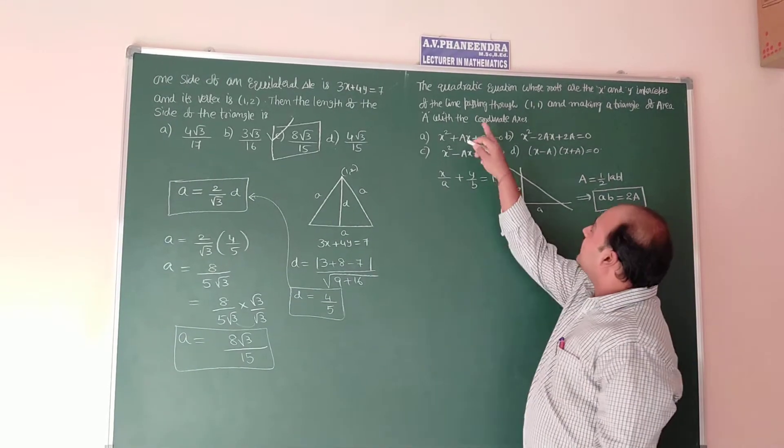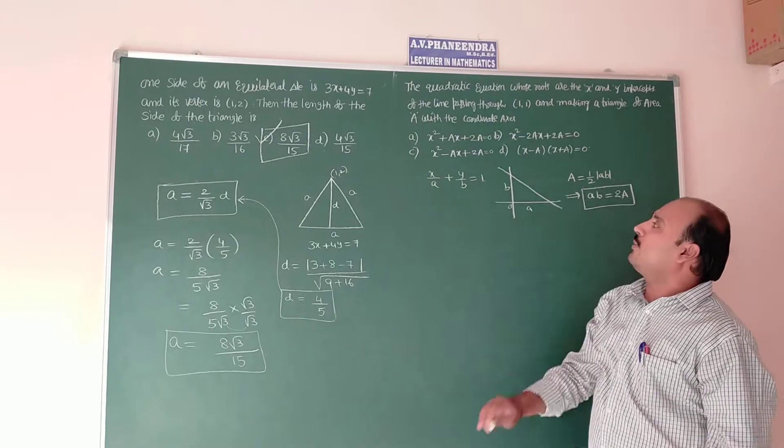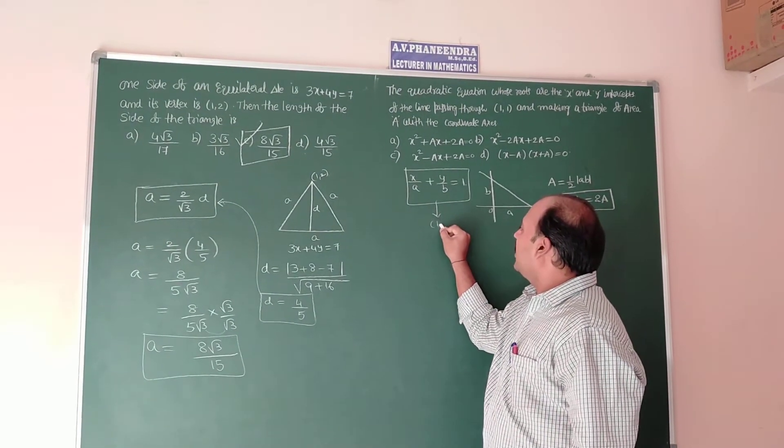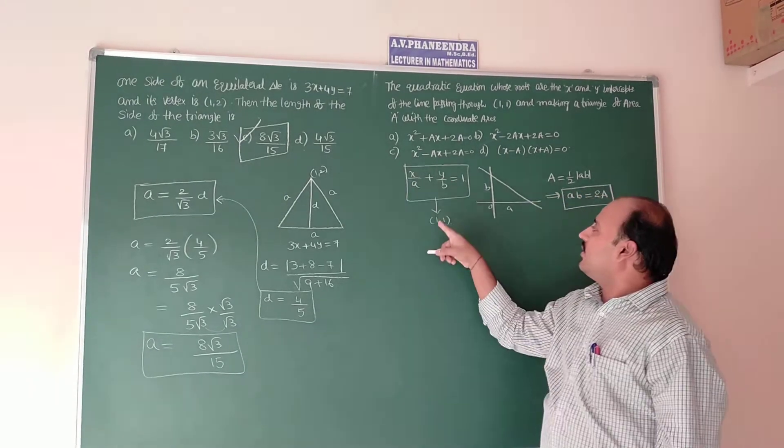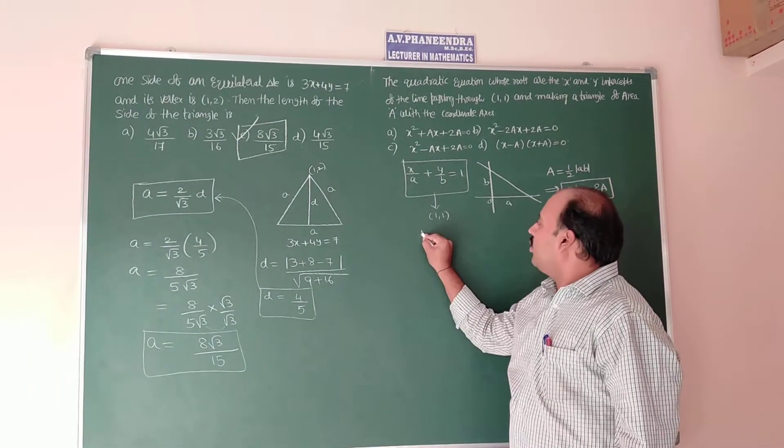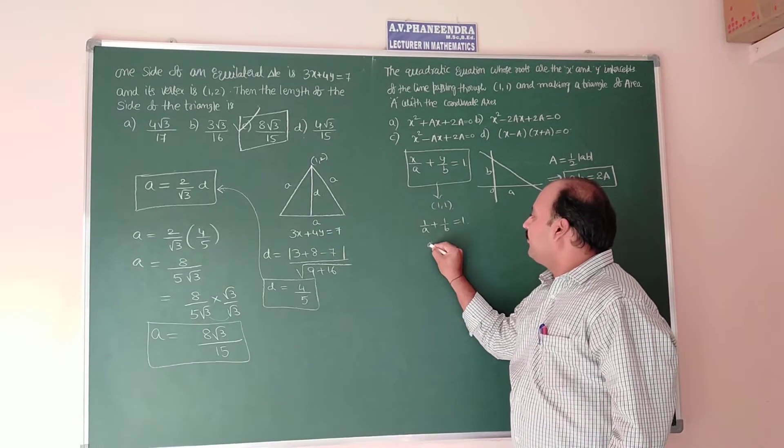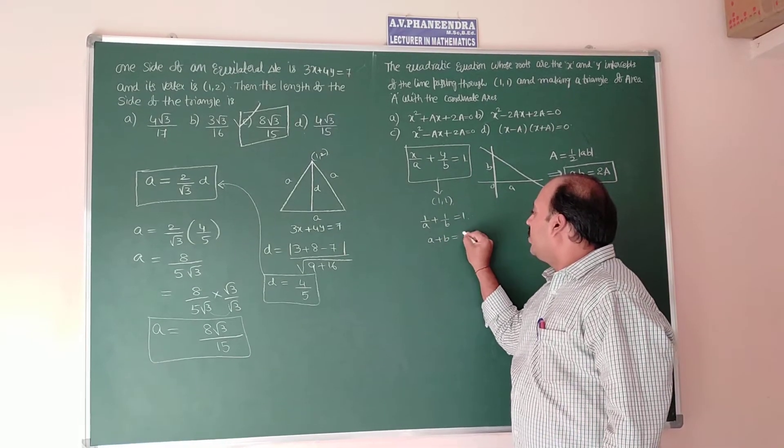After that one more condition is given, this equation is passing through 1,1. In place of x, y substitute 1,1, therefore 1 by A plus 1 by B is equal to 1. After taking LCM, A plus B is equal to AB.